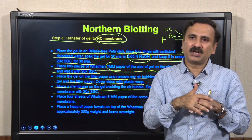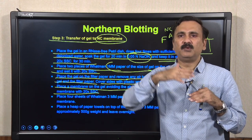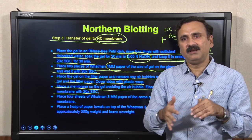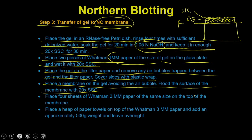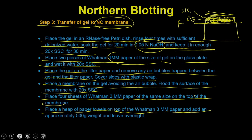If there are air bubbles, there will be no capillary action in that area and RNA will not be transferred there. It is therefore very important to roll the membrane surface with a test tube or roller to remove all air bubbles between the agarose block and the nitrocellulose membrane. After that, place four sheets of Whatman 3 mm filter paper of the same size on top of the membrane, then place a stack of paper towels on top of the Whatman filter, and add approximately 500 grams of weight; leave it overnight.